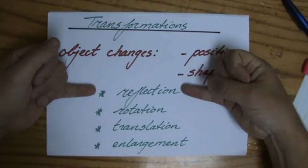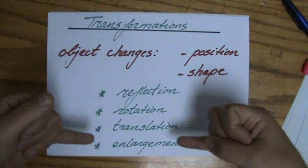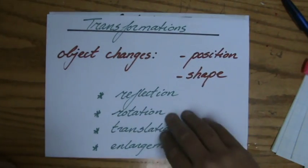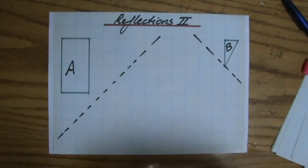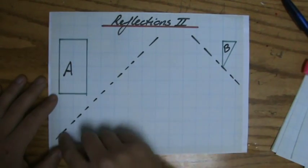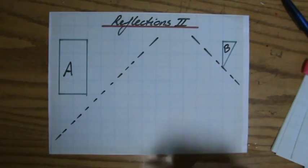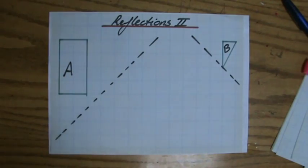We're doing reflections now. We'll do rotations, translations, and enlargements later. Usually with reflections you're going to get some sort of diagonal as a mirror line.